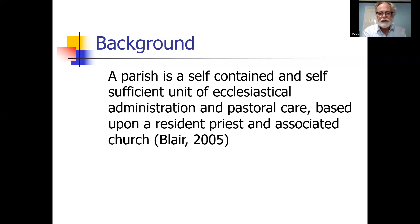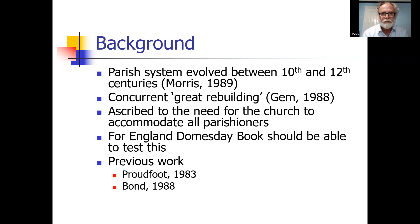Starting with the definition of parish — a parish is a self-contained and self-sufficient unit of ecclesiastical administration and pastoral care based upon the resident priest and associated church. That's from John Blair's Church in Anglo-Saxon Society. The key entities are the geographical area, a priest, a church, and a congregation — all related but independent. The parish system in England evolved between the 10th and 11th centuries; it spread slowly across the country, paralleling what was happening on the continent.